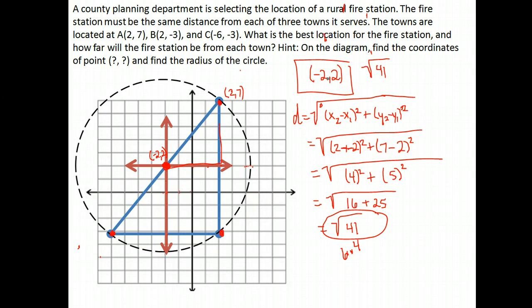41 does not have a perfect square root, so I'm just going to leave it as √41. If you wanted the exact answer, you could do √41 on your calculator, and it looks like it's about 6.4. So the station would be about 6.4 miles from each town, or √41. It should be centered on the grid at (-2,2).